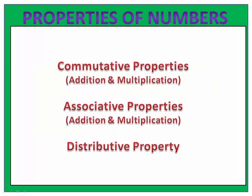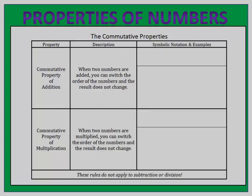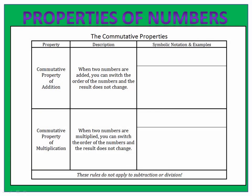Let's talk about some important properties of numbers. There are three properties we'll look at today: the commutative properties, the associative properties, and the distributive properties. You've probably heard of some of these before. We'll begin with the commutative properties, and there are two of them — one for addition and one for multiplication.